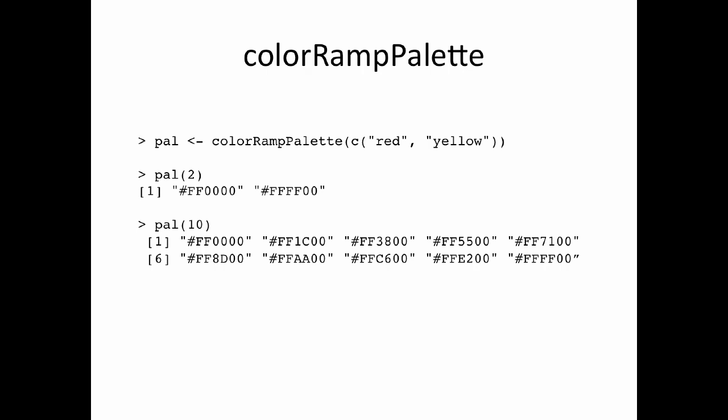The function returned by colorRampPalette is called pal and it takes integer arguments, not numbers between 0 and 1. If I give it 2, pal(2) returns two colors that interpolate the palette. Since the palette only has two colors, it just gives me those two colors. The format is slightly different — instead of a matrix with RGB values, it gives a character vector with values in hexadecimal. Each string has six digits: the first two represent red, the second two green, and the third two blue.